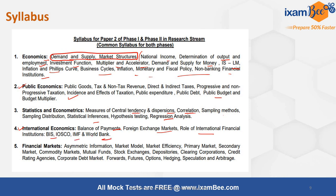Financial Markets topics include asymmetric information, market models, market efficiency, primary and secondary markets, commodity markets, mutual funds, stock exchanges, depositories, clearing corporations, credit rating agencies, corporate debt markets, forwards, futures, options, hedging, speculation, and arbitrage.